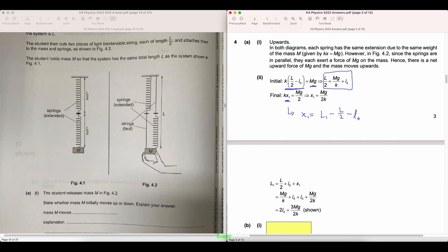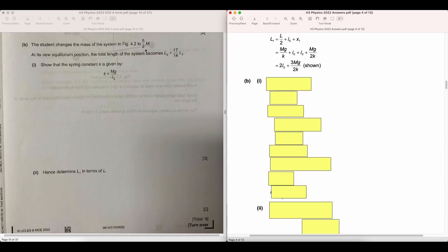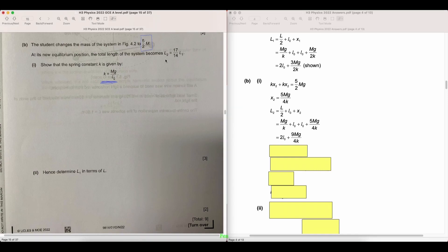Now in part B, we change the mass of the second scenario from M to 5 over 2M. We're given the new equilibrium position and we're asked to extract the spring constant from it. We repeat the same steps by balancing forces and that gives us the expression of L2 in terms of L0 and K. We're now bringing the additional information that we've been provided in order to find the expression for K.